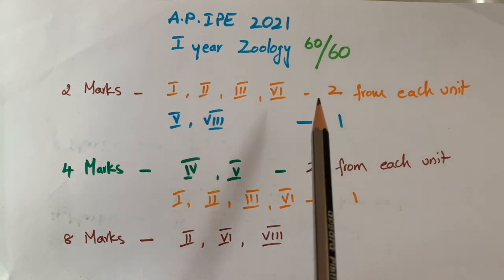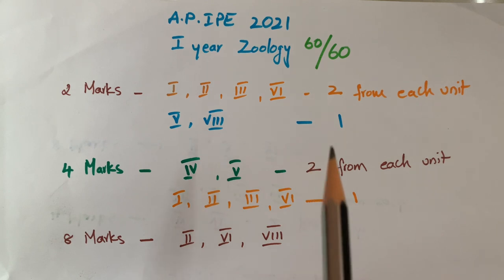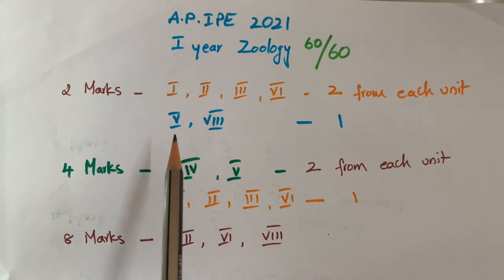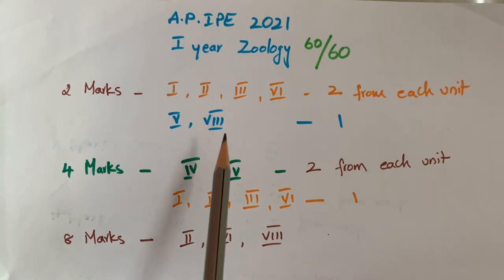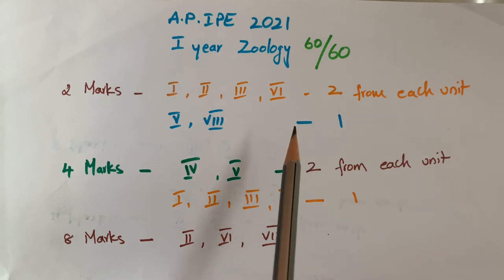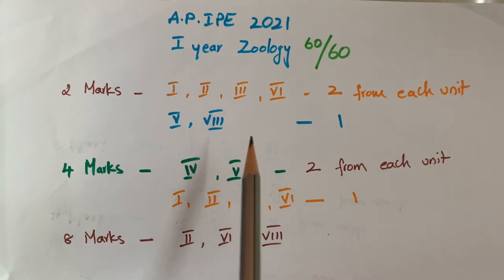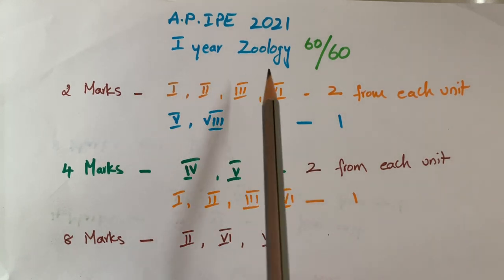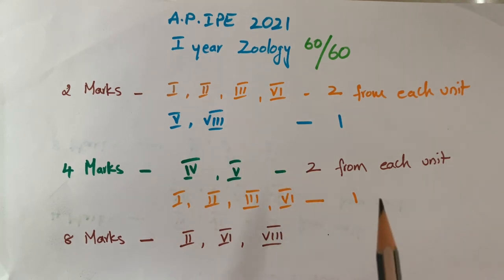From the 5th chapter and 8th chapter, only 1 question comes from each of these chapters. So you have to learn all the 2 marks questions which are present in the textbook without giving any choices.